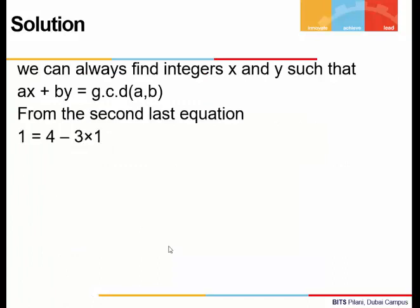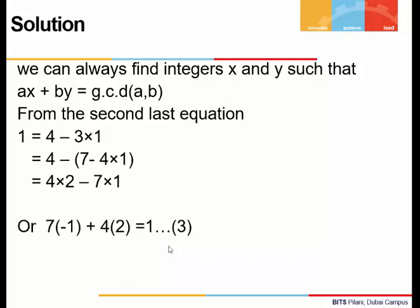Now, if we do our backward calculations we see that 7×(-1) + 4×2 = 1. But the original equation 7x + 4y = 50 is different from this as here the right hand side is 1.